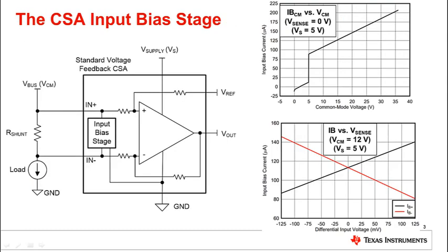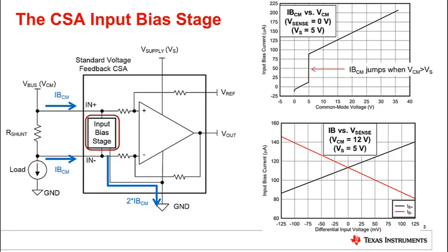For most current sense amplifiers, there exists an input bias stage that allows the device to operate at very high common mode voltages, independent of the supply voltage. The bias stage usually siphons some common mode input bias current from the bus voltage to partially power the CSA. This can be seen with the input bias current versus VCM plot in the datasheet, where the bias current will jump once the common mode voltage exceeds the supply voltage.